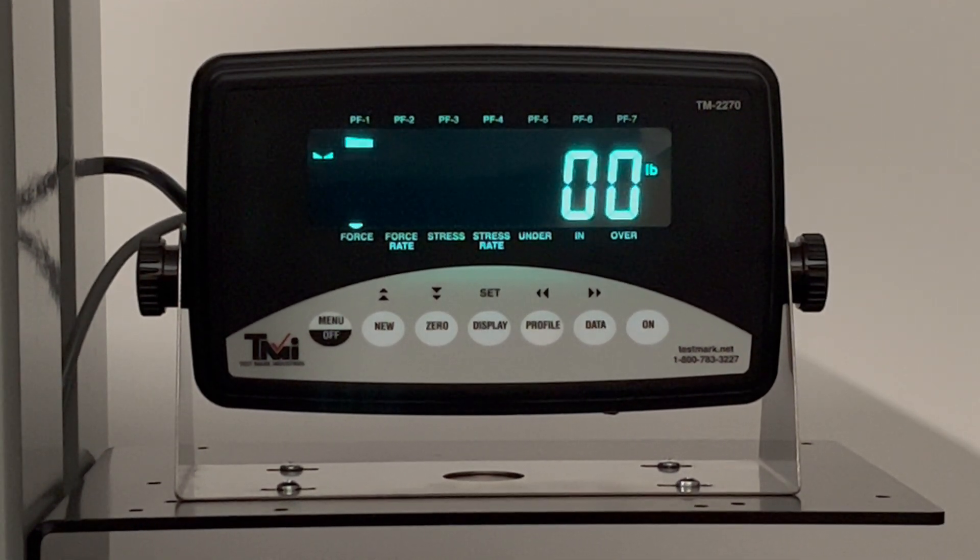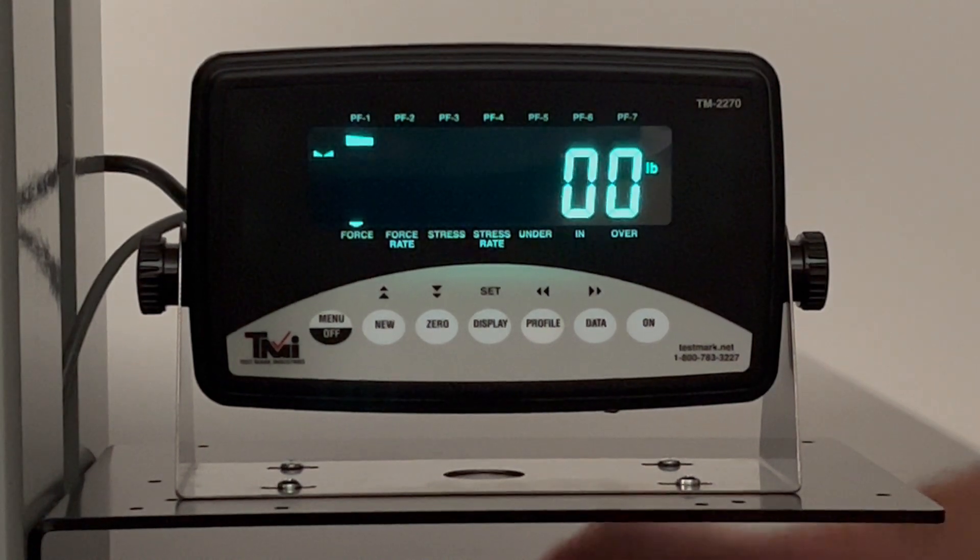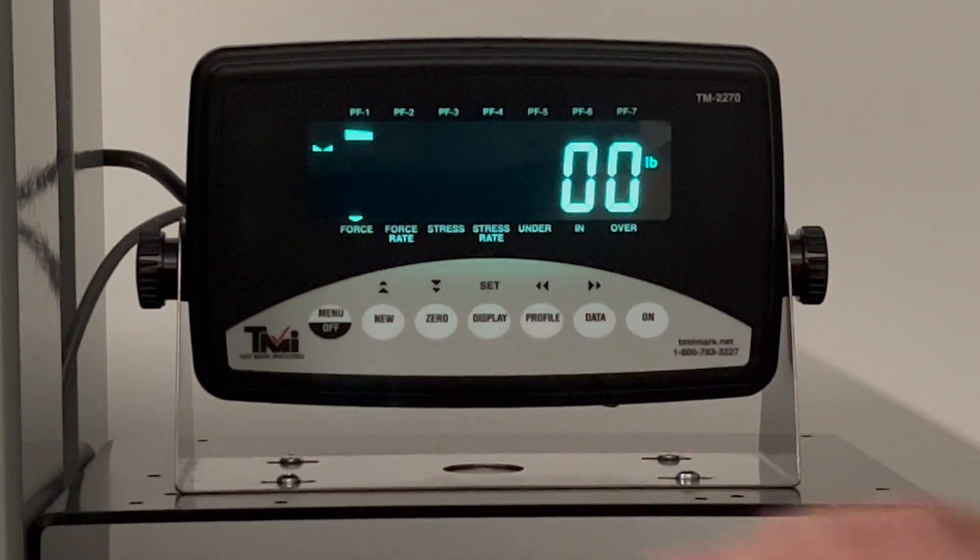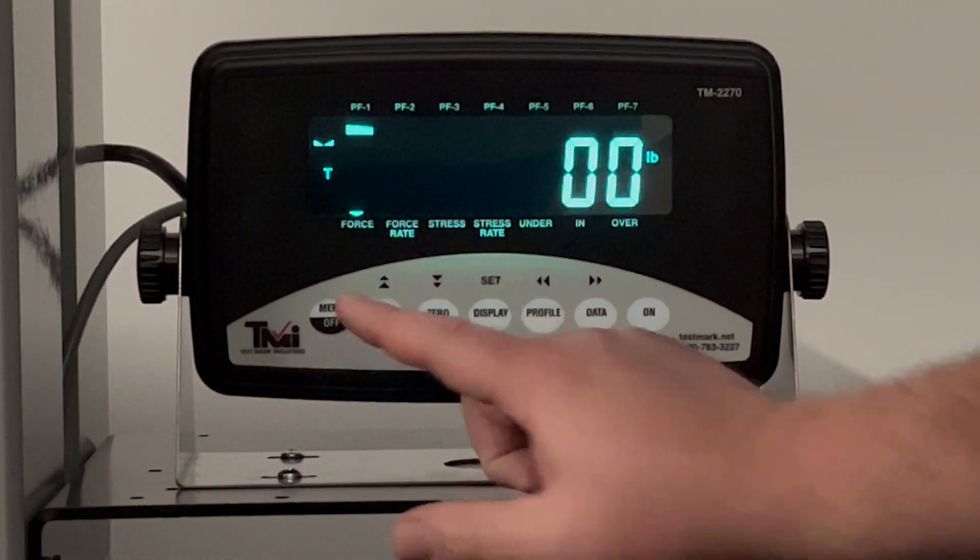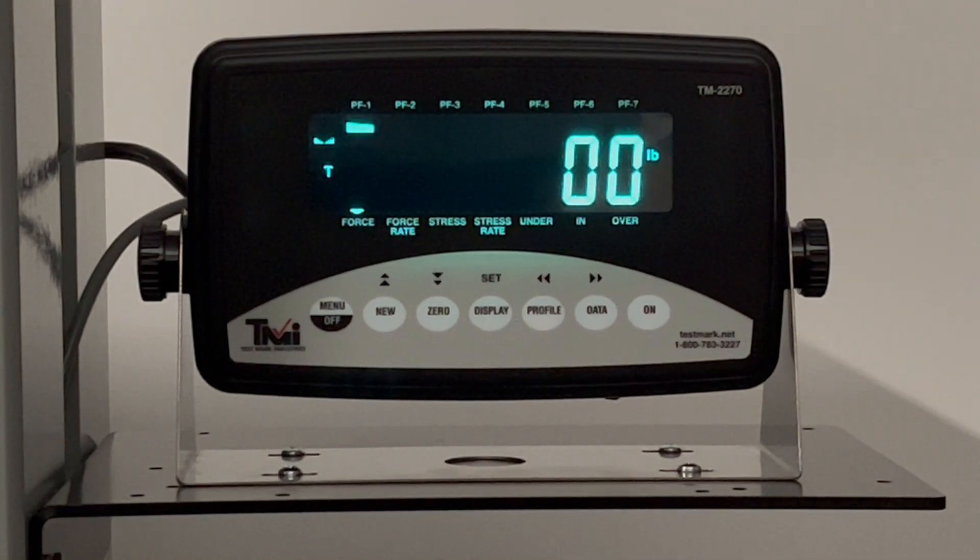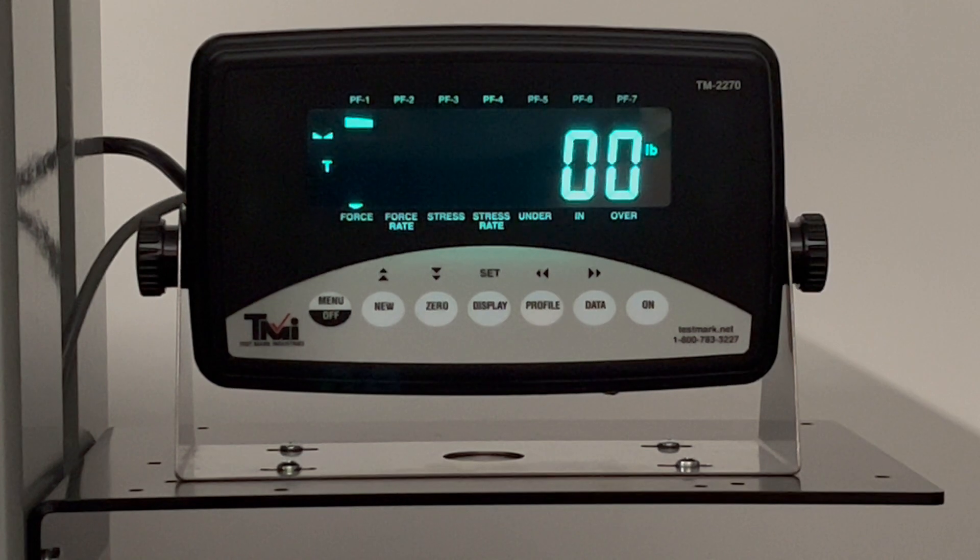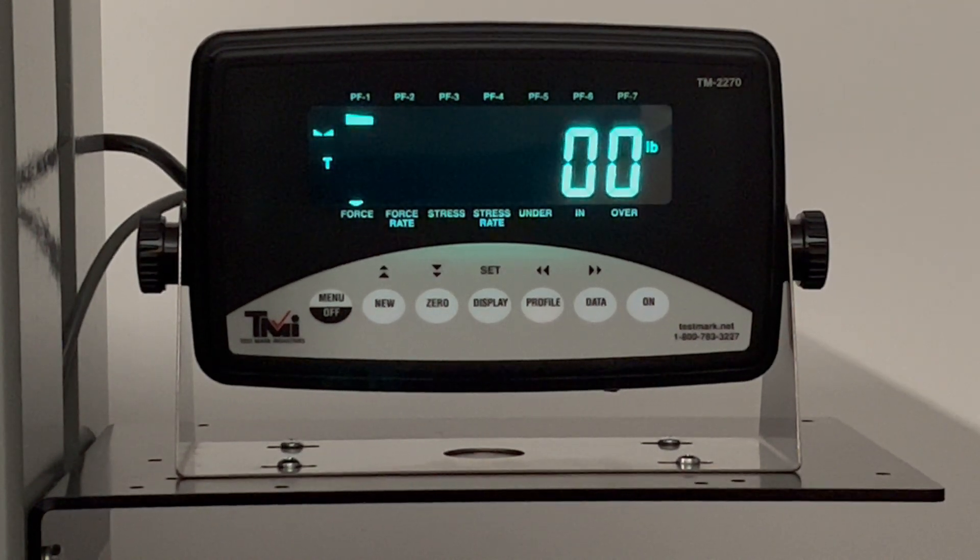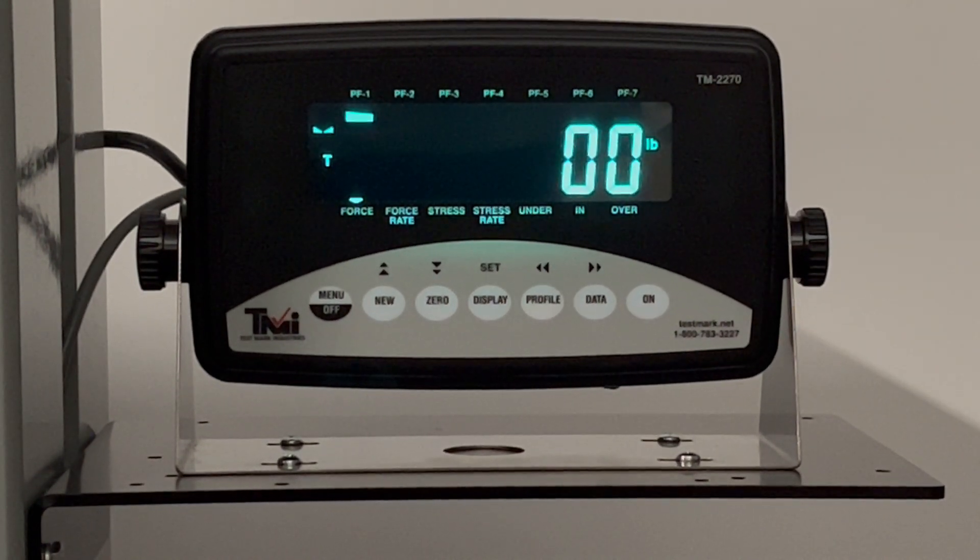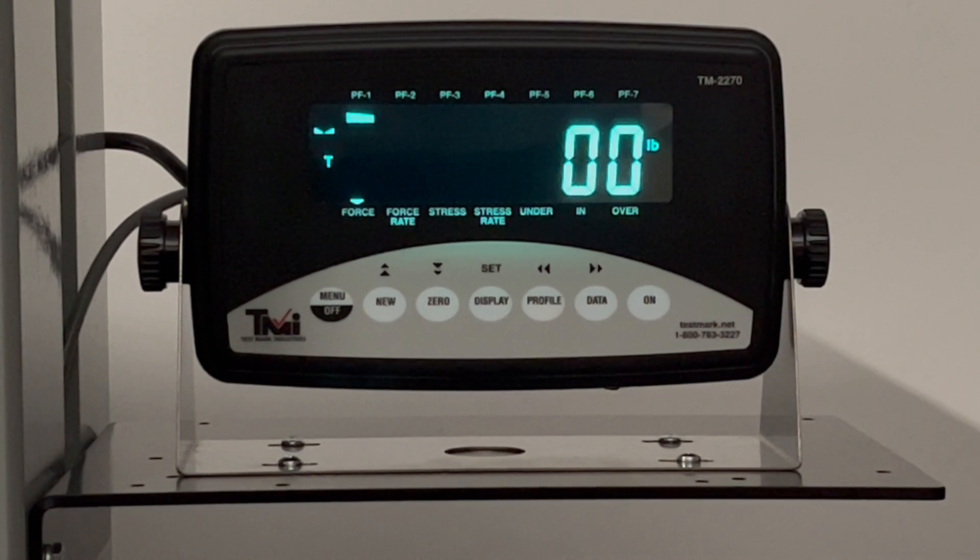To begin this test, I will turn the pump on and I will press the new button. You will see a T appear on the screen to let the operator know the test has begun. The screen will also change color to let the operator know once they have passed the load threshold.